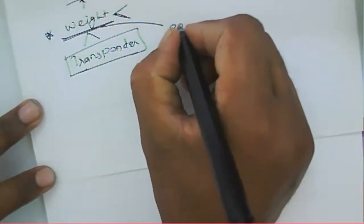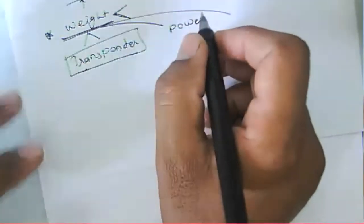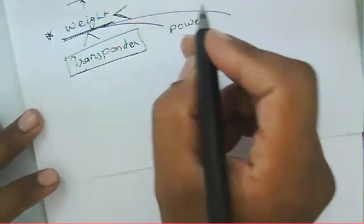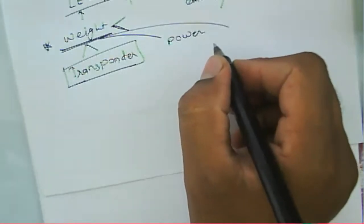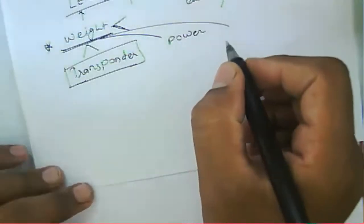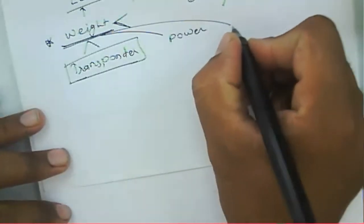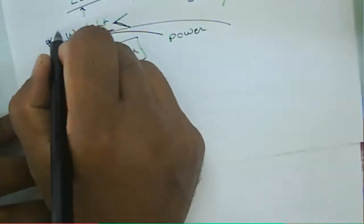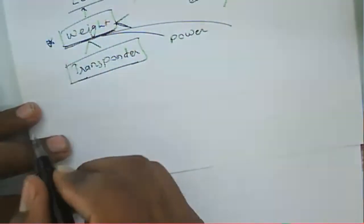Weight is not only due to the transponders — weight also increases because of the power system components such as solar panels, batteries, and some fuel that will move the satellite in a given orbit whenever required. If small changes in the orbit occur, that fuel tank is used to correct the satellite's position. So the total overall weight of a satellite depends upon the various components of the satellite.